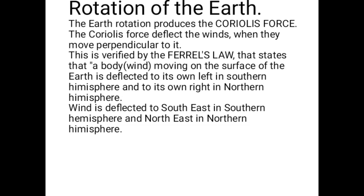Another factor that affects wind speed and direction is the rotation of the Earth. The Earth rotates on its axis. The rotation of the Earth does not affect the wind directly, but it produces a force called the Coriolis force. The Coriolis force is produced by the rotation of the Earth on its axis, and it deflects the wind — meaning it causes a change in direction.